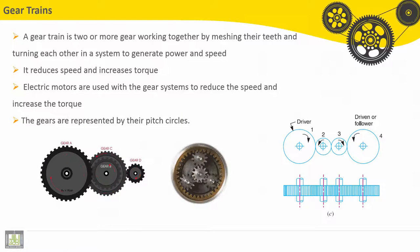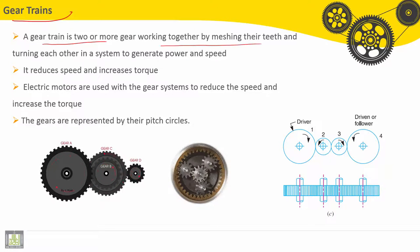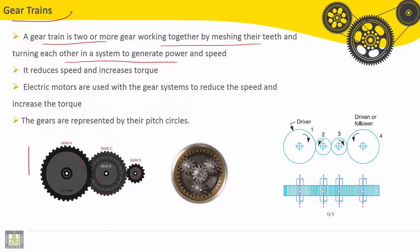I will present here gear trains. A gear train is two or more gears working together by meshing their teeth and turning each other in a system to generate power and speed. We have here in this figure some types of gear trains.